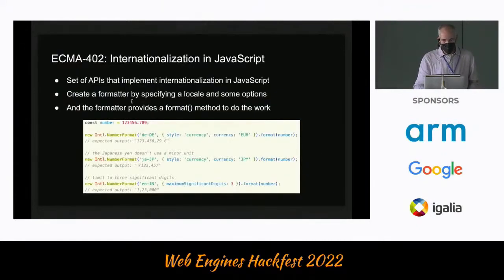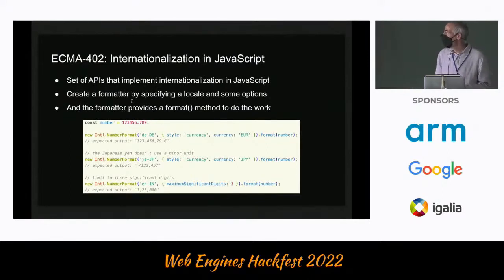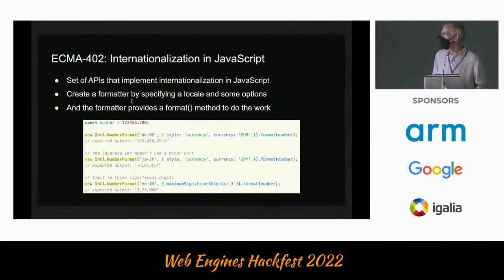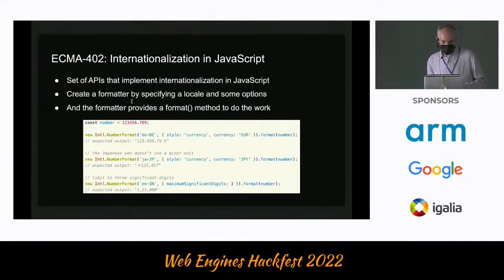ECMA-402 is a set of APIs to implement internationalization in JavaScript. They basically work like this: you create a formatter by specifying a locale and some options, and then the formatter provides a format method that will actually do the work. In the first example, we're creating a formatter for Germany for currency.